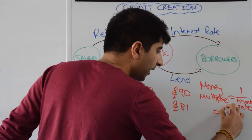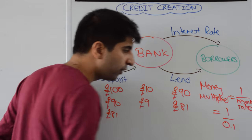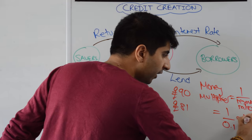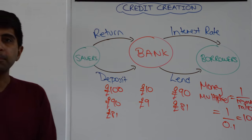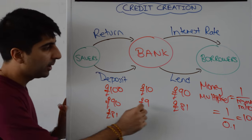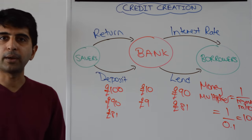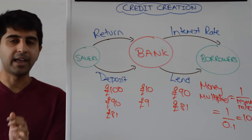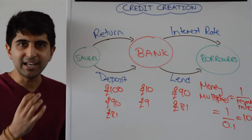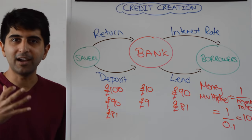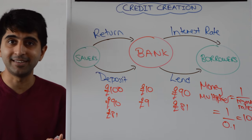So in my example the money multiplier is one over ten percent. One over 0.1 which gives you a value of ten. So if you multiply the initial deposit by ten you get a thousand pounds. And that is the money supply as a result of an initial deposit being put in a bank. A thousand pounds of money now exists in the economy.